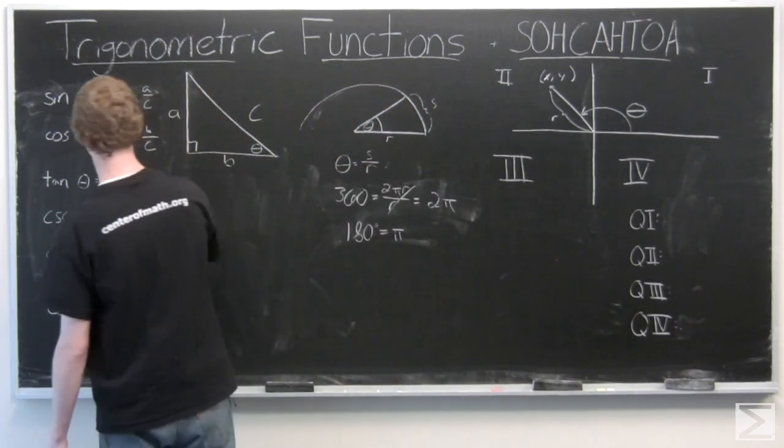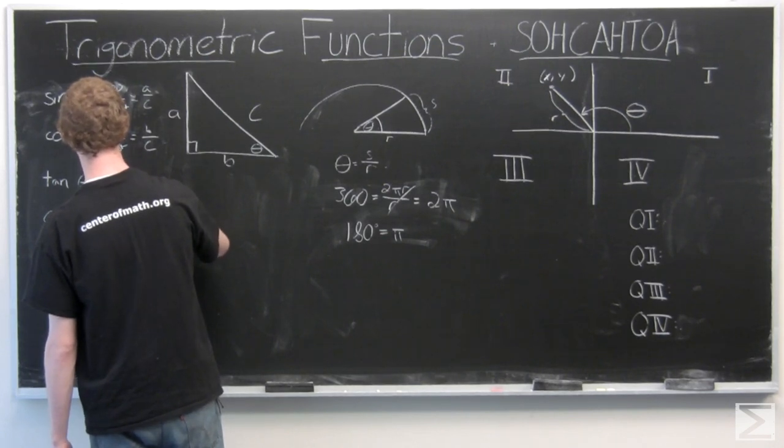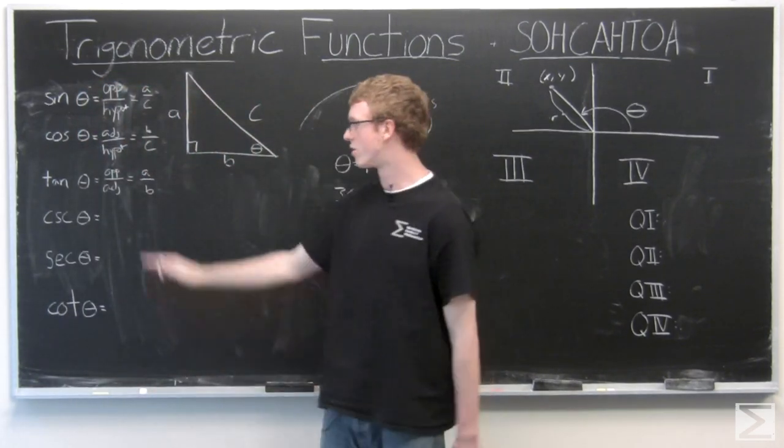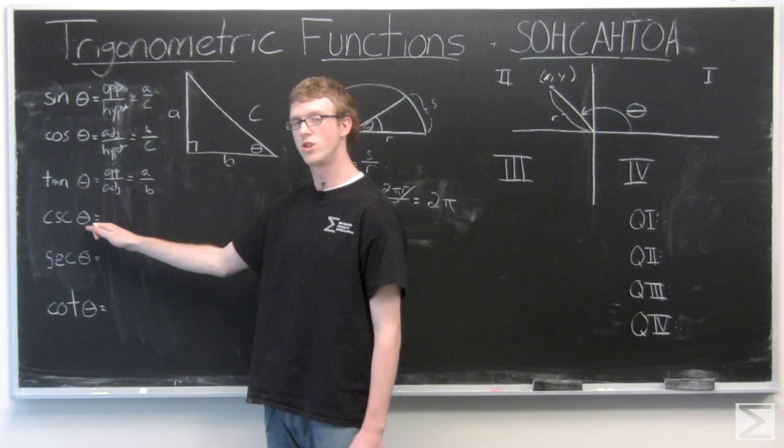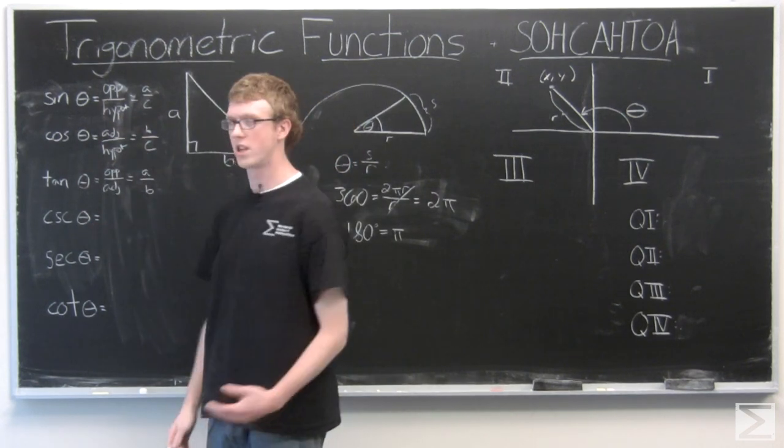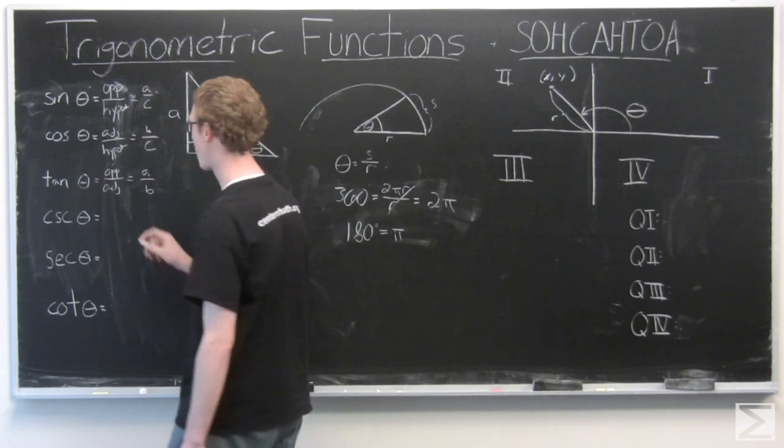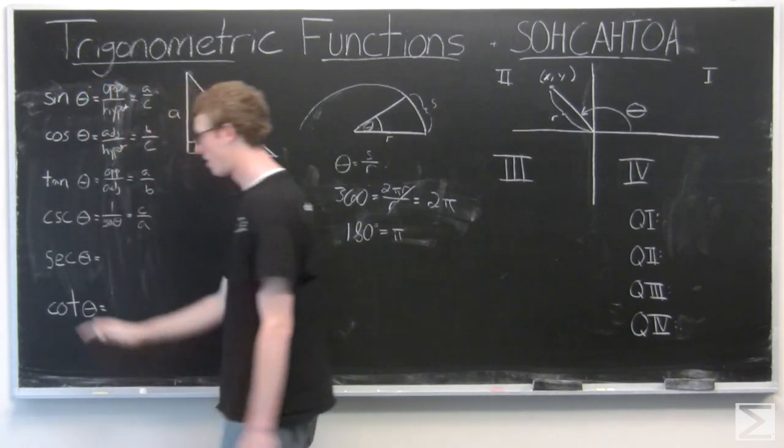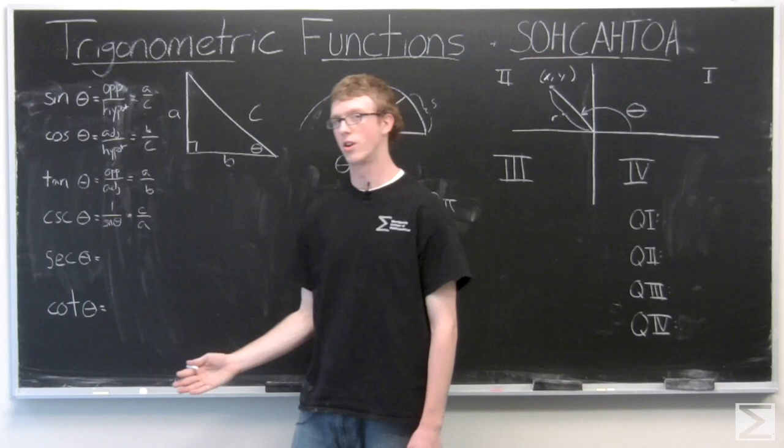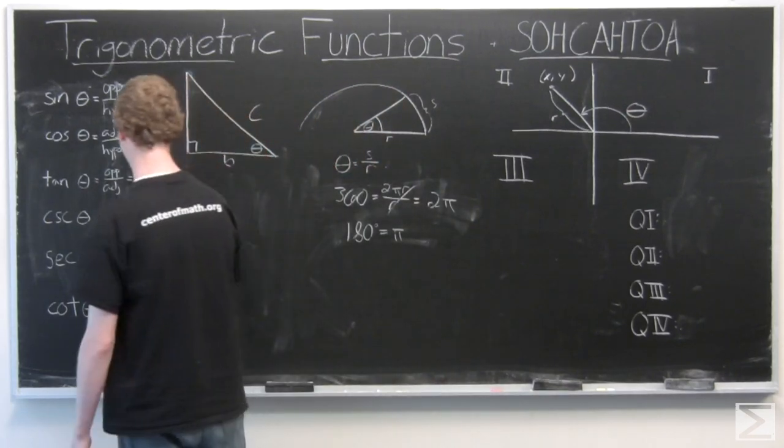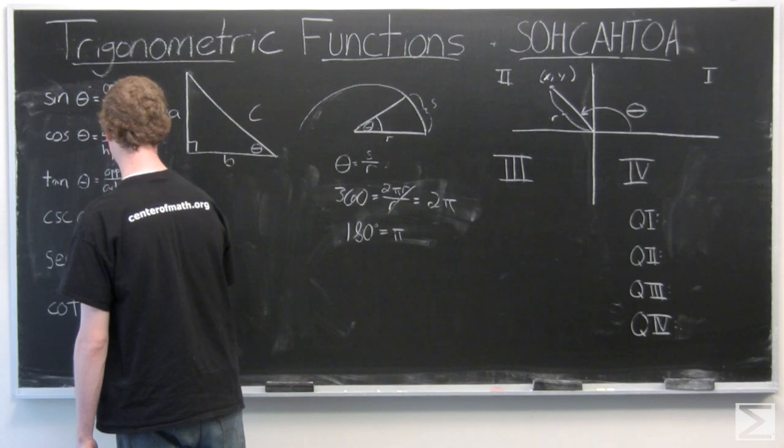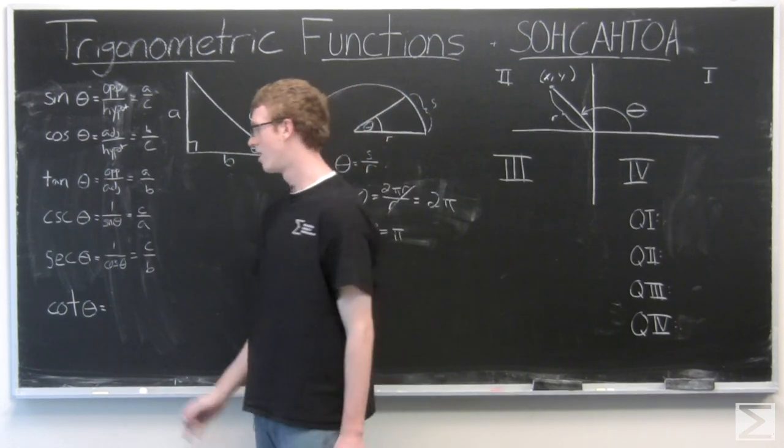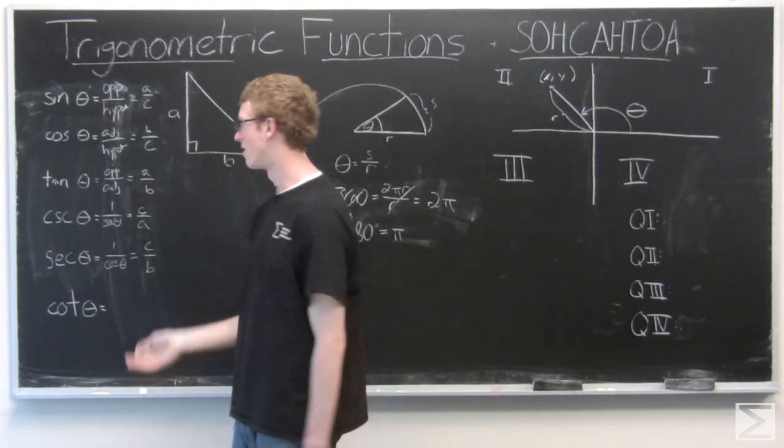So now we have the reciprocal trig functions on the bottom here. Cosecant of theta is really just one over sine, so it's hypotenuse over opposite. Secant of theta is one over cosine, which is C over B. And cotangent is one over tangent, which is adjacent over opposite, which is B over A.